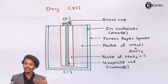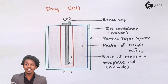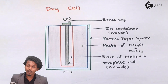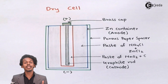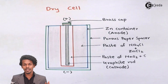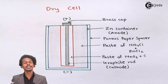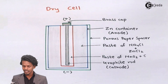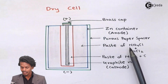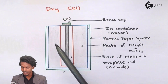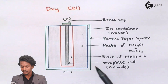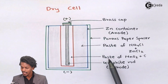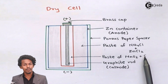Since no aqueous solution is used, it doesn't require any aqueous material to react or generate electricity. Hence the name 'dry cell'. It also consists of an inner graphite rod covered with a paste of MnO2 and carbon.